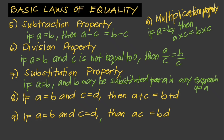The next property: if A equals B and C equals D, then A plus C equals B plus D. That is, if equals are added to equals, the results are equal. And the last one: if A equals B and C equals D, then AC equals BD. That is, if equals are multiplied to equals, the results are equal.